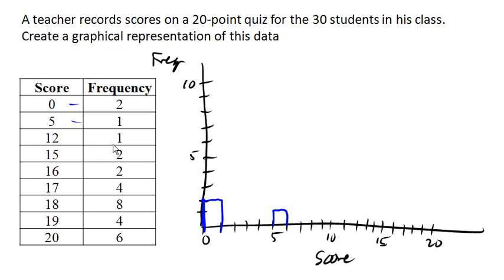And then we've got a score of 15 with a frequency of 2. And then a score of 16 with a frequency of 2. So this is going to start at 16 and extend up to, but not quite including 17. And then at 17, we're going to have a bar of height 4.